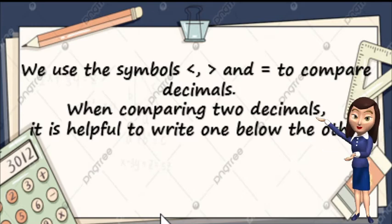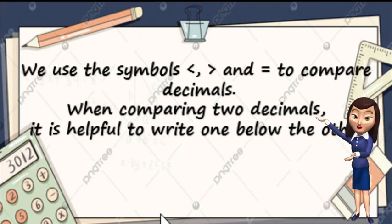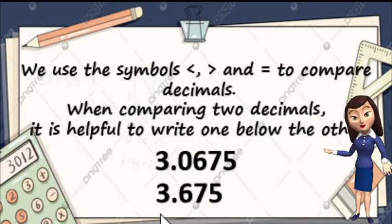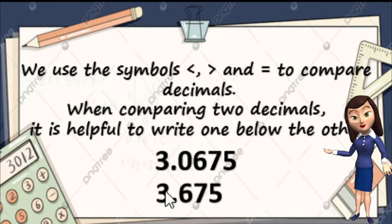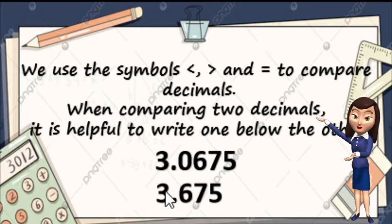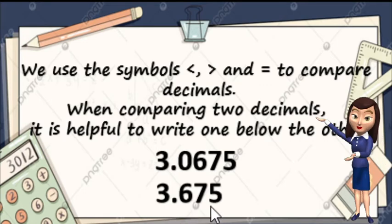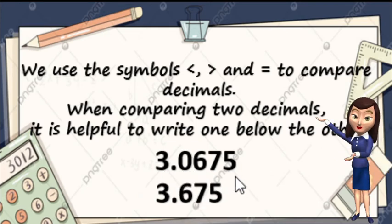We use the symbols less than, greater than, and equal to compare decimals. When comparing two decimals, it is helpful to write one below the other. So example, we have here two numbers — both are 3 and 675 thousandths. So unahin natin yung whole number parts. Since parehas naman siyang 3, ang susunod natin ay yung kauna-unahan nating place value sa decimal numbers, and that is the tenths place. Yung tenths place nito ay zero, tenths place nitong isa is six. So mas malaki yung ating six. Therefore, the second number — 3 and 675 thousandths — is greater. So mas malaki itong nasa ilalim natin.